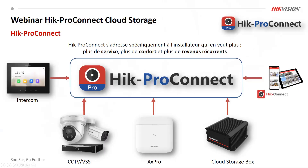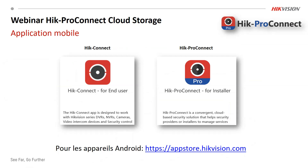Avant de faire cela, on va faire un petit recap de ce qu'on a dit la dernière fois. EG Pro Connect, c'est une plateforme pour les installateurs pour gérer les clients. Les clients, ils utilisent EG Connect pour mettre tous leurs composants dedans : des enregistreurs, les panneaux d'alarme, l'intercom. Ils savent gérer ça à la maison. Mais pour l'installateur, EG Pro Connect est la plateforme à utiliser pour gérer, configurer et toutes les fonctionnalités de suivi. On appelle ça Health Care Monitoring avec les clients. EG Connect, c'est pour l'utilisateur final. Et EG Pro Connect, c'est pour l'installateur.